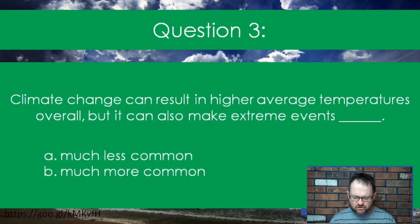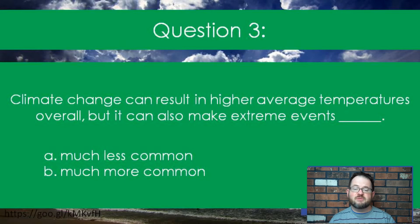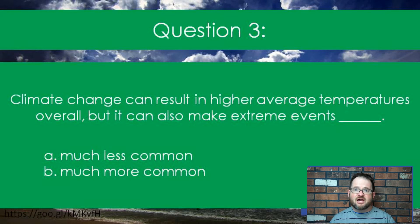Just to wrap up this quick lecture, let's do two more questions that will give you a hint about the kinds of things I can ask on the upcoming quiz. Question three: climate change can result in higher average temperatures overall, but it can also make extreme events — like unusually warm or unusually cold periods — either A, much less common, or B, much more common. Go ahead, think about it, and then pick from one of the two links below this embedded video. You'll get a little feedback before you move on to question four.